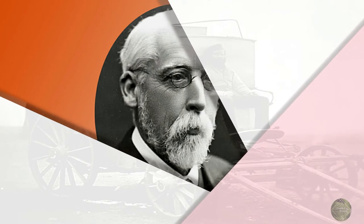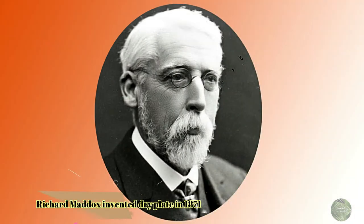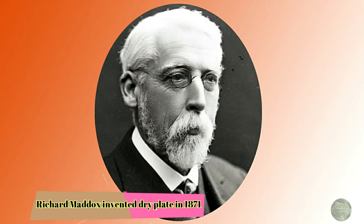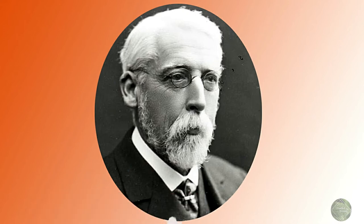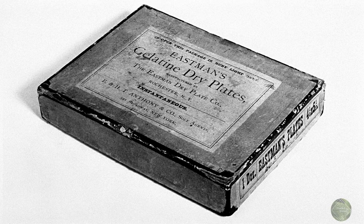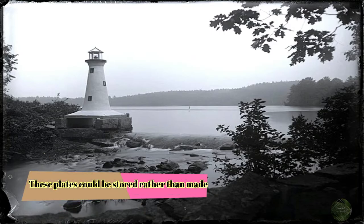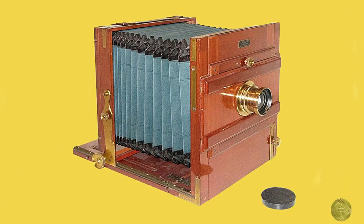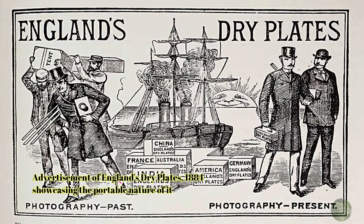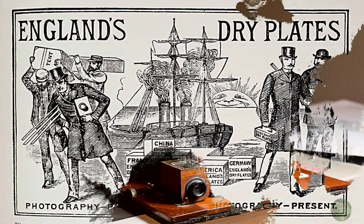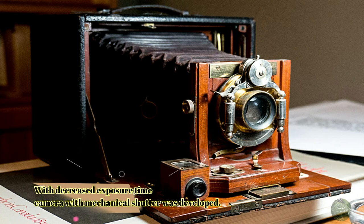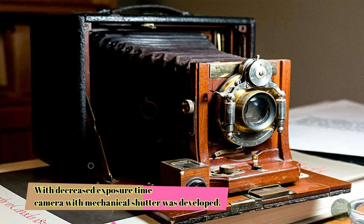Dry plates: In the 1870s, photography took another huge leap forward. Richard Maddox improved on a previous invention to make dry gelatine plates that were nearly equal to wet plates in speed and quality. These dry plates could be stored rather than made as needed, allowing photographers much more freedom in taking photographs. The process also allowed for smaller cameras that could be handheld. As exposure times decreased, the first camera with a mechanical shutter was developed.